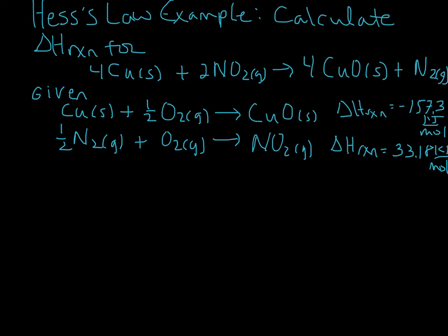Here's a Hess's law example that we can look at. We are going to calculate the delta H reaction — the enthalpy of reaction — for this target reaction. We are given two reactions to work with: reaction 1 and reaction 2. We can use those to calculate the delta H reaction for our target reaction.